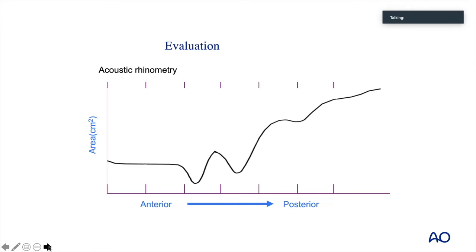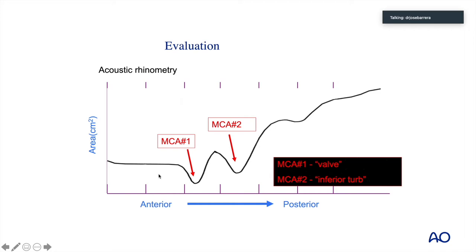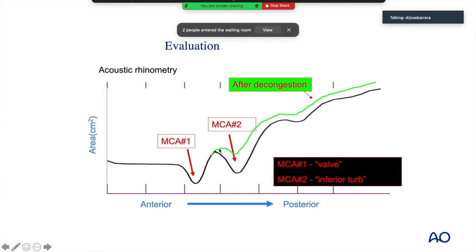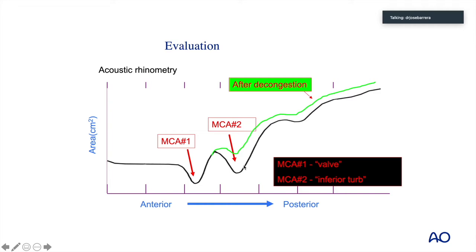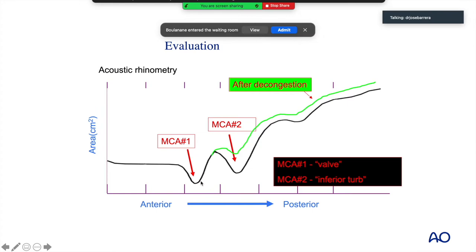If one takes acoustic rhinometry to evaluate the overall area and looks at airflow dynamics from the anterior to the posterior aspect of the nose, we can see two attenuations: one is the valve itself, and the second is the inferior turbinate. You can decongest the patient with a nasal steroid or oxymetazoline to improve soft tissue airflow, but you will never be able to improve valve dynamics from an internal or external valve. Medications alone are not sufficient when it comes to variable resistance.